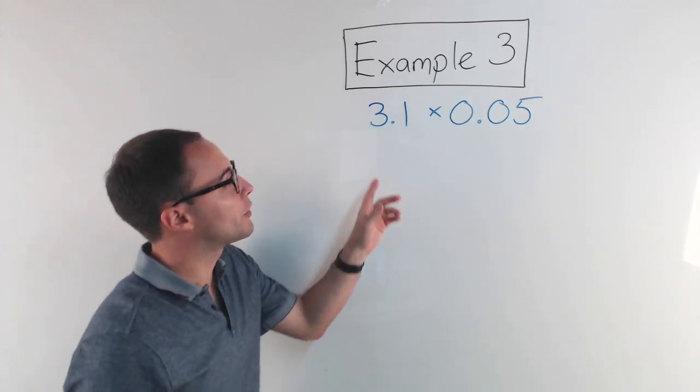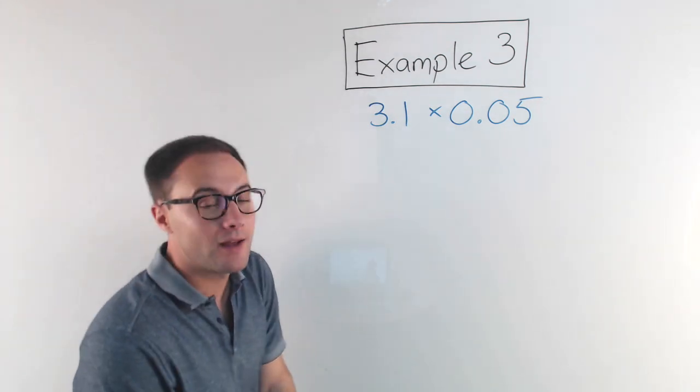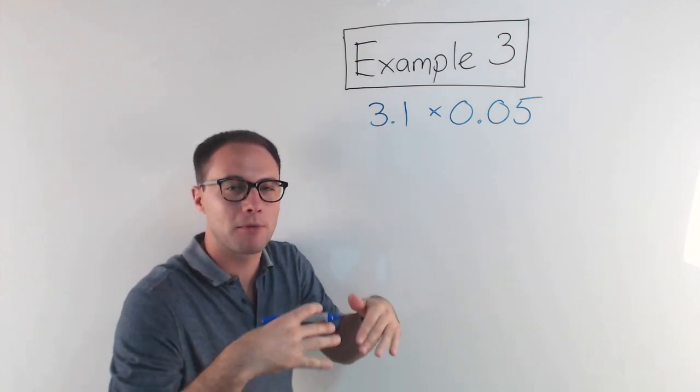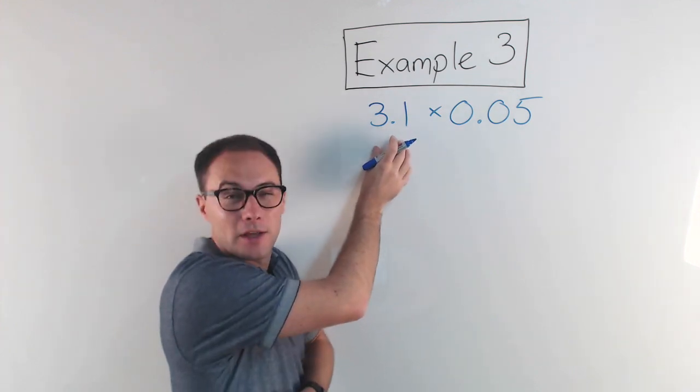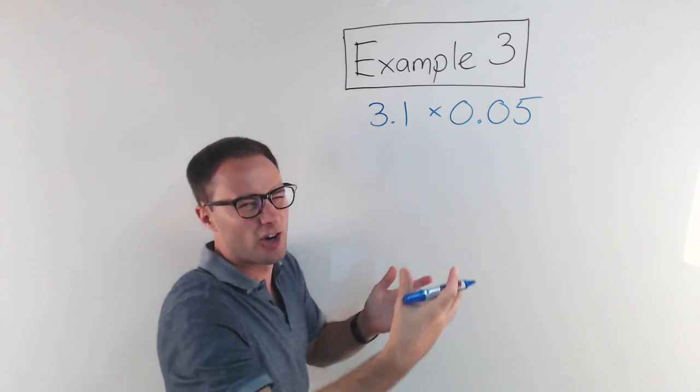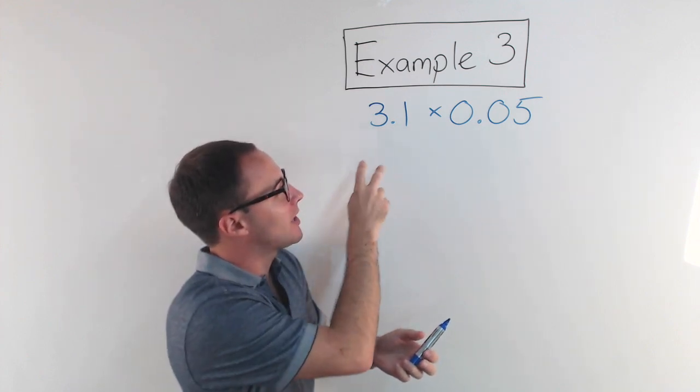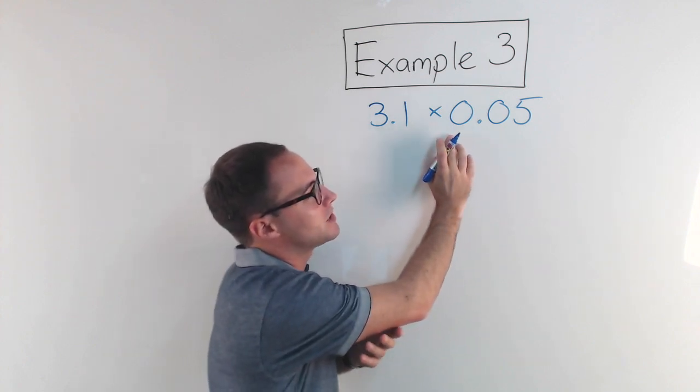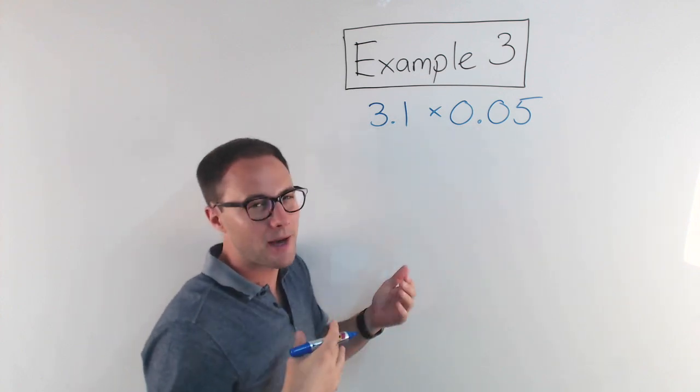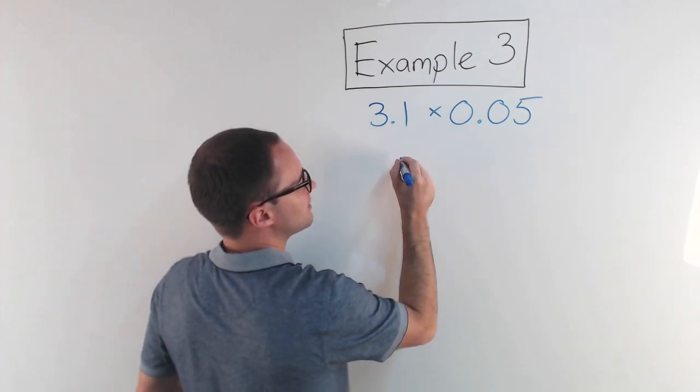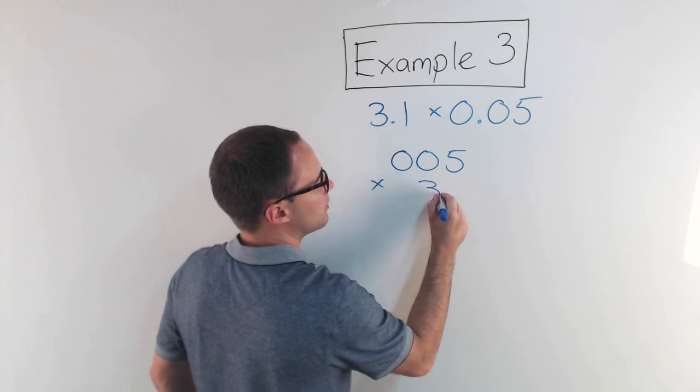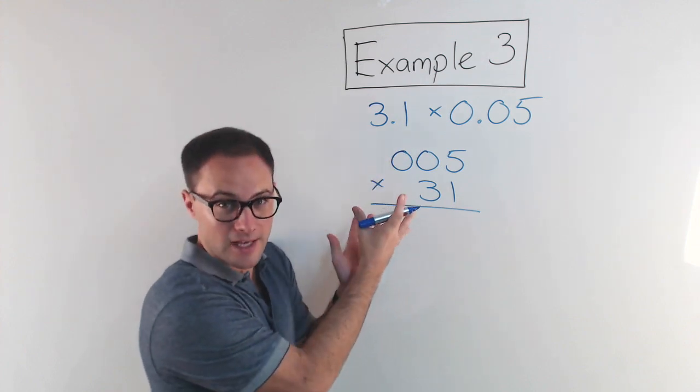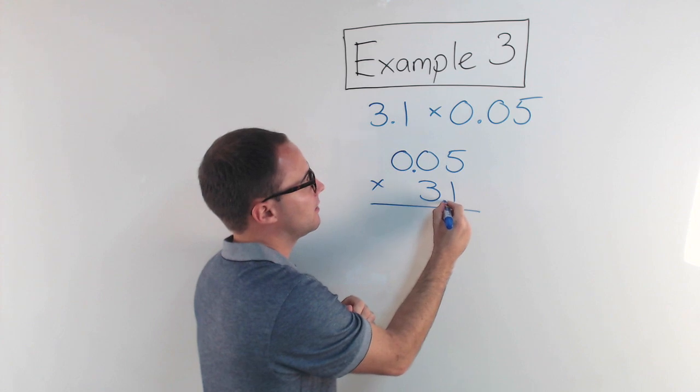All right, here's our last example: 3.1 times 0.05. Now if you remember, at the beginning of the video I said when you're multiplying with decimals, pretend the decimal points aren't there and set up the problem like that. So I'm not going to think of this as 3.1, I'm going to think of it as 31 times 005. Now there's a couple ways—I could put the 31 on top or I could put the 005 on top. Me personally, I like to do whichever one has the most digits, I like to put that on top, but it doesn't matter, you can do it either way you want. So I'm going to set this up as 005 times 31. Okay, pretend the decimal points aren't there and set it up that way. Now that I've set it up, I'm going to put them back so I don't forget. Decimal point is there, decimal point is there.